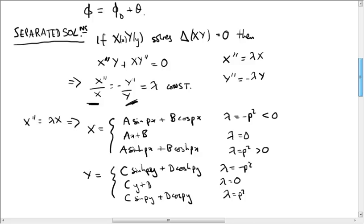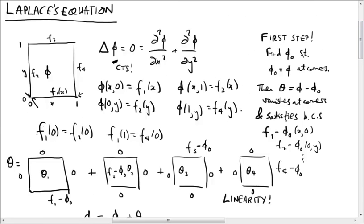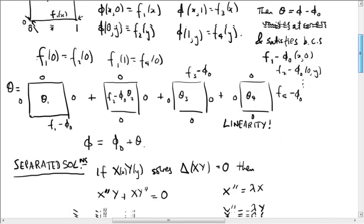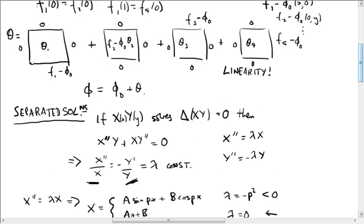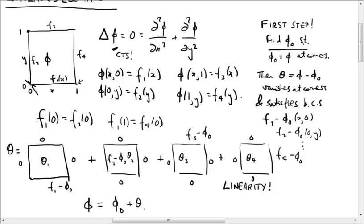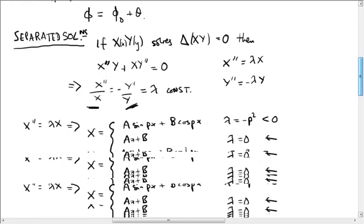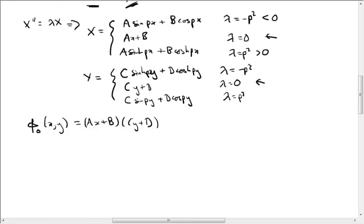So remember the first step in all of this was to find a phi_0 which agreed with phi at the corners. And my claim is that all we need for this is to consider solutions with lambda equals 0. So phi_0 is going to be of the form phi_0 of xy equals (ax plus b) times (cy plus d), and we want it to agree with the four values at the corners. And the reason that we can do this is because we have four constants: a, b, c, d.